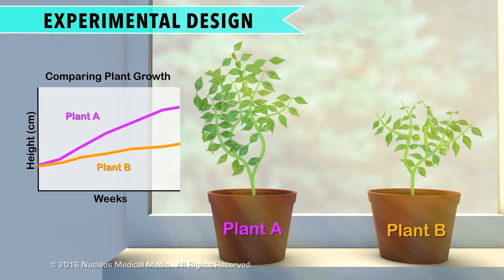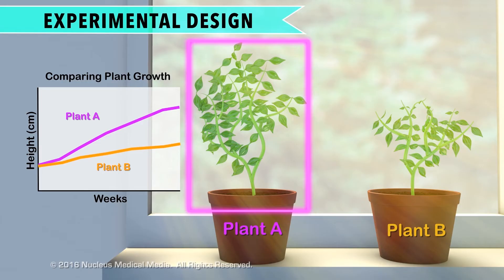As you can see, Plant A did grow bigger than Plant B, so it appears that the results of this controlled experiment support your hypothesis.